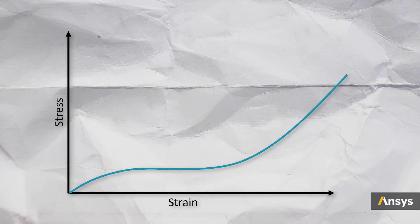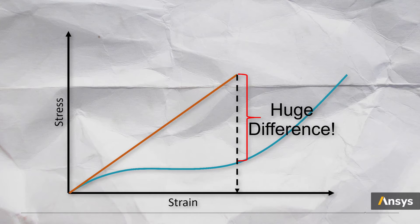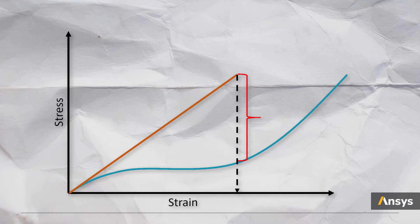Suppose we use the initial stiffness, which is nothing but the slope of the tangent drawn to the initial portion of the curve. In this case, let's compare the stress responses for both the curves at a given strain. We can see that the linear elastic assumption results in very large stress compared to the actual hyper-elastic response. This will result in a highly stiff response for the structure and can negatively affect engineering decisions made based on this result. This is why we need a different way of modeling hyper-elastic materials so we can capture the full complex response of soft materials.